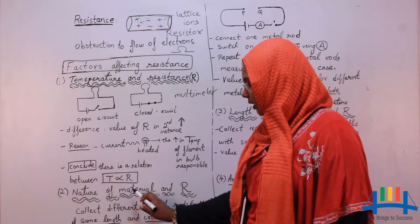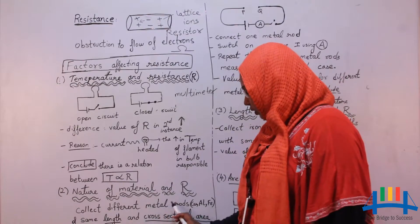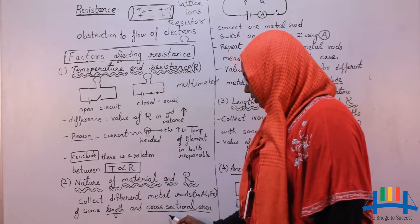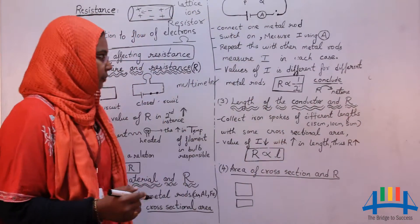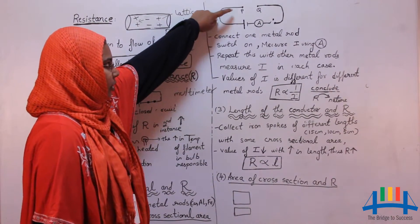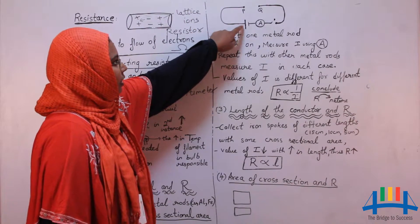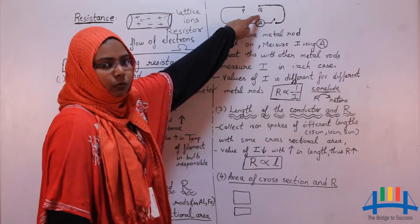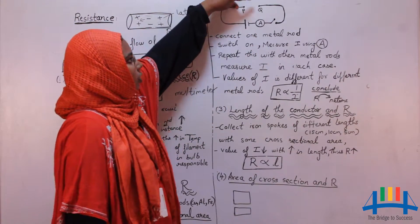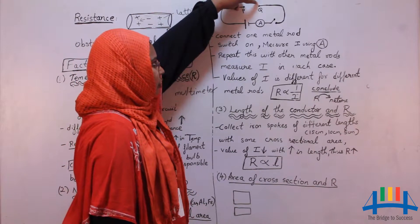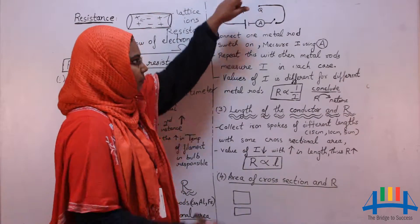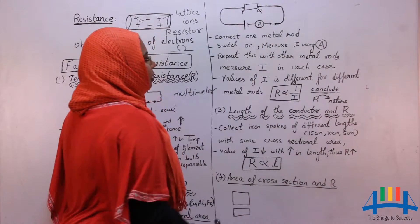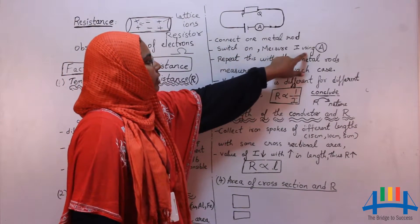Coming to the next factor — nature of material and resistance. Collect different metal rods: copper, aluminium, iron, etc., of the same length and same cross-sectional area. Make a circuit as shown with a conducting wire, battery, ammeter, and a switch. P and Q are the two open terminals of the circuit. Attach one of the metal rods between the two free terminals P and Q, then switch on the circuit.